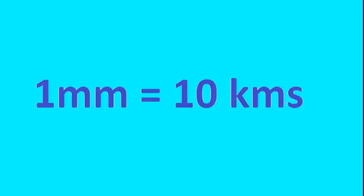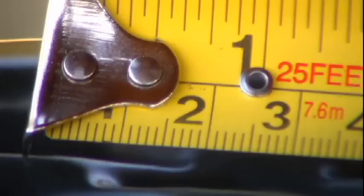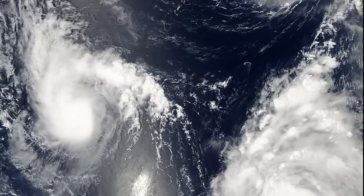If we say every millimeter is going to be about 10 kilometers, the first layer would only be about a millimeter thick. That's all there would be to that area where there would be clouds, storms, and planes.